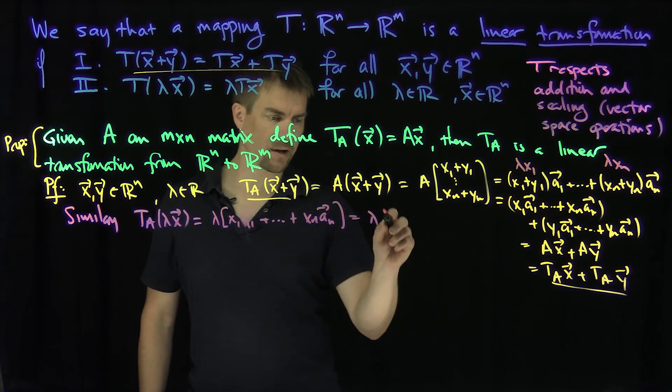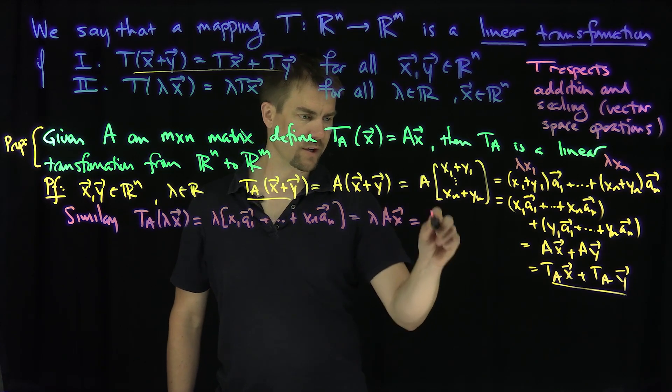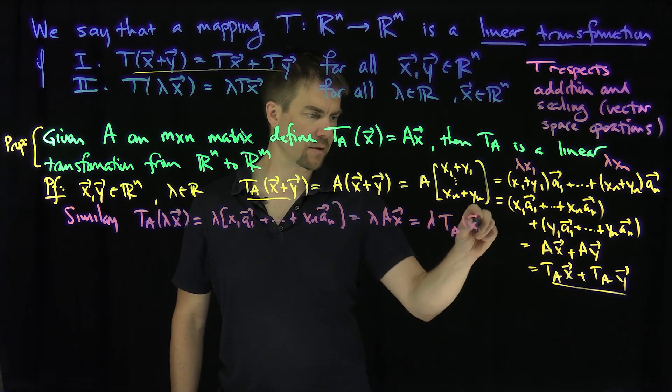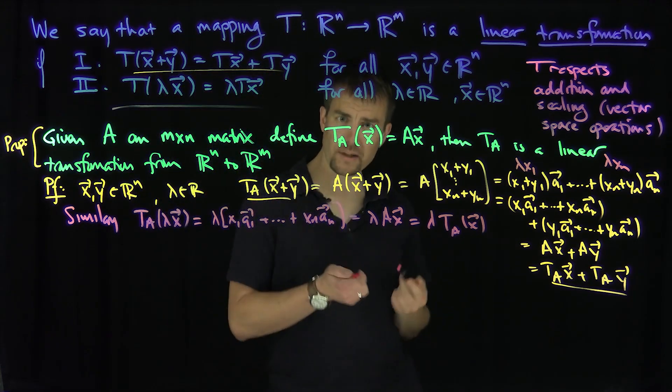Which is lambda A x, which is lambda times T_A of x. And that satisfies the second property. So every matrix gives rise to a corresponding linear operator.